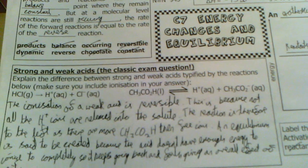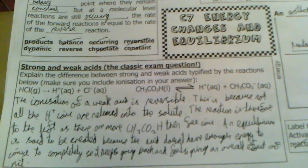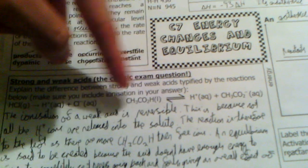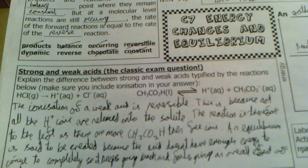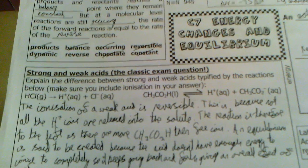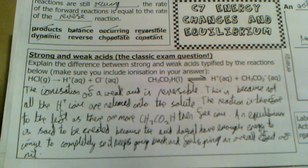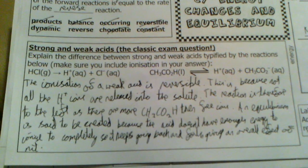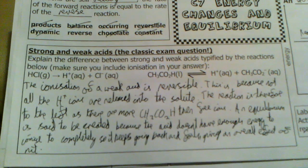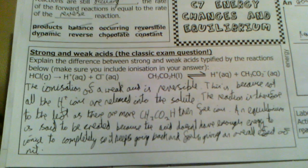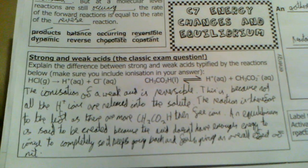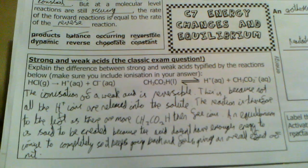Therefore, it's said to reach an equilibrium, because the reaction is to the left. Right, there's more ethanoic acid than the H plus and CH3CO2 minus ions. So, it's said to reach an equilibrium. An equilibrium is said to be created, because the acid doesn't have enough energy to ionise completely. So, it keeps going back and forth, giving an overall effect of nil.